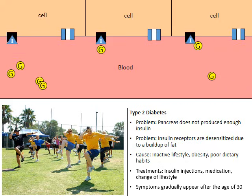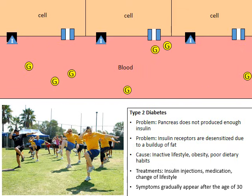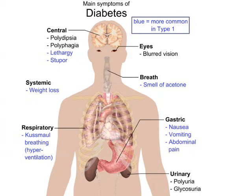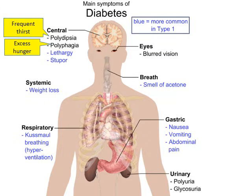Even though a person may not be diagnosed with diabetes until their 30s or 40s, there are plenty of warning signs leading up to that diagnosis. Some of the symptoms that may lead to a diabetes diagnosis include: polydipsia, which is frequent thirst; polyphagia, which is excess hunger — if your cells aren't getting glucose, they'll signal you to eat more, which exacerbates the problem of too much glucose; and polyuria, which is frequent urination, because as glucose builds up in the blood, the kidneys remove the extra buildup and it is urinated out of the body.